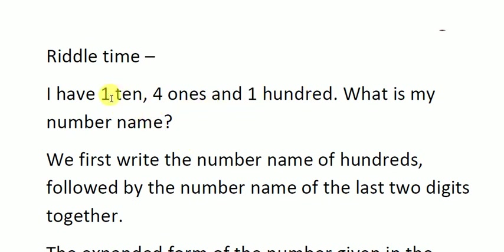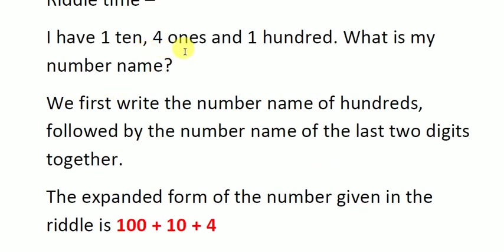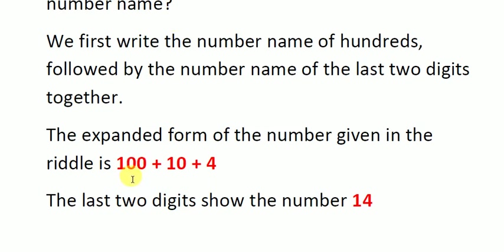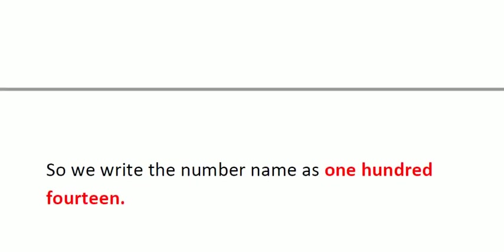So: one hundred, one ten, four ones. Can you guess the number? Seeing the number of tens, ones, and hundreds, let us first write its expanded form: one hundred, one ten, four. This is the expanded form. The last two digits show the number fourteen — one ten and four ones make fourteen. So children, putting hundreds, tens, and ones together, the number given was one hundred fourteen. The number name is one hundred fourteen.